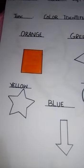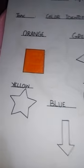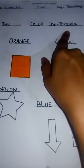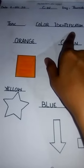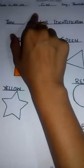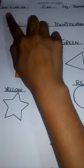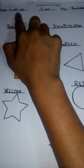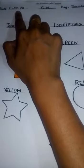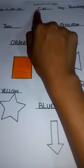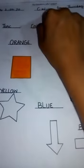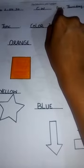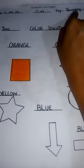Here you are seeing an object which is identification of colors. First of all, mention the date on the right side of the page. Today's date is 2nd April 2020. Write classwork in the center and the day at the left side. Today's day is Thursday.